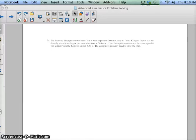I wanted to help you out with the Starship Enterprise problem, where the Starship Enterprise drops out of warp with a speed of 50 kilometers per second, only to find a Klingon ship 100 kilometers directly ahead, traveling in the same direction at 20 kilometers per second. Without slowing down, the Enterprise is going to collide with the Klingons, so we've got to see what we can find out here.